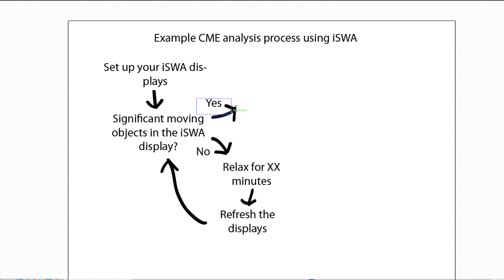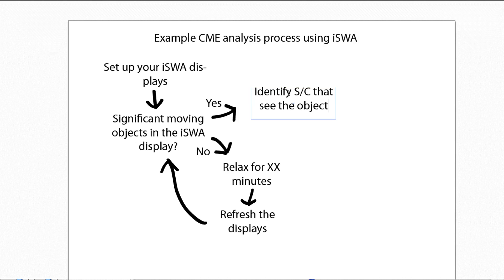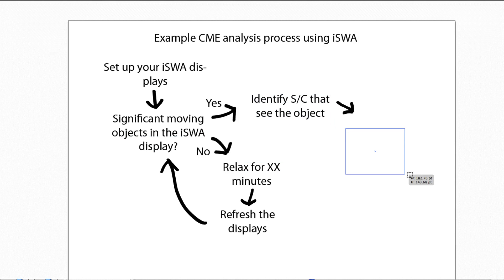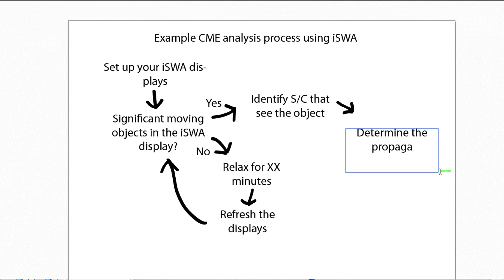If you identify something significant and moving, the first step in the yes branch is to identify the spacecraft that see the moving object. Once you have done that, you can start to carry out more detailed analysis. The next step is to identify, for example, the direction of the CME — to determine the propagation direction of the object, which in our case would typically be a coronal mass ejection.